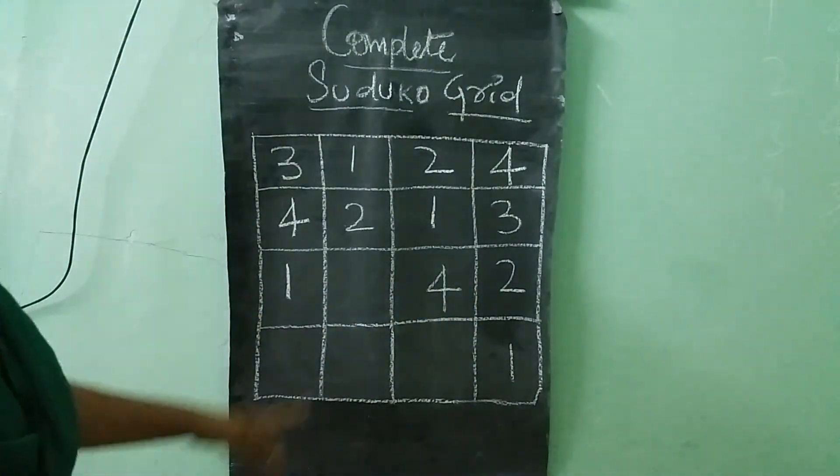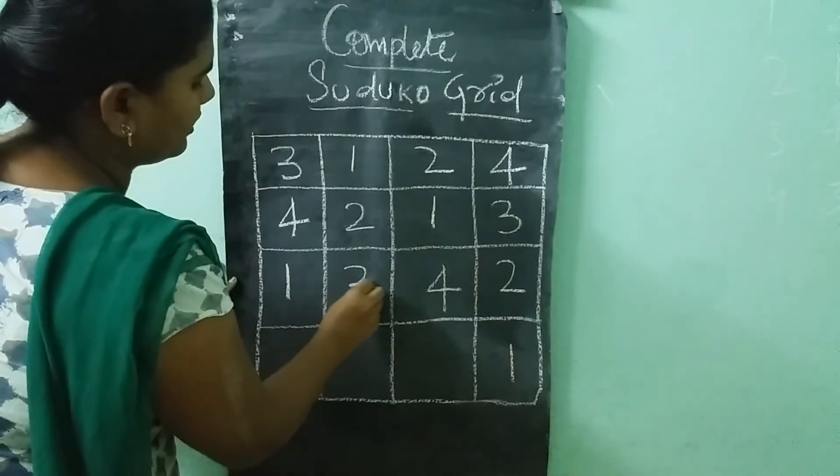1, 2, 4 is there. Remaining 3 is left. Right? So we need to write 3 here.